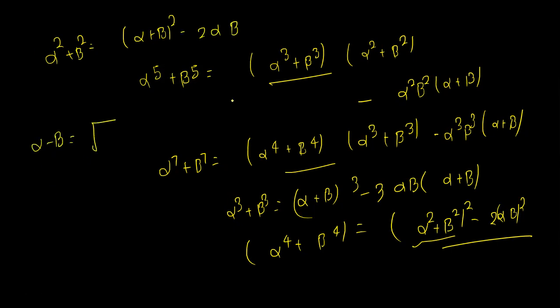And you can simply write alpha plus beta whole square minus 4 alpha beta. This way we can write symmetric functions of roots.